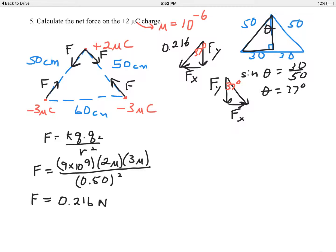So that comes out to be, if you look at that first triangle at the top here in black, the cosine of 37—cosine of 37 equals F sub y over the 0.216 newtons.